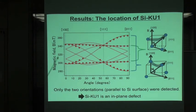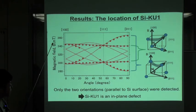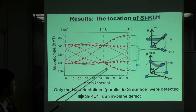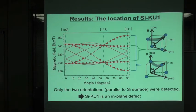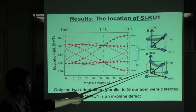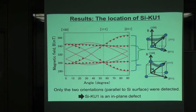However, in this experiment, only two directions which are parallel to the silicon surface can be detected, like this figure. From this result, we concluded that SI-KU1 is an interface defect.